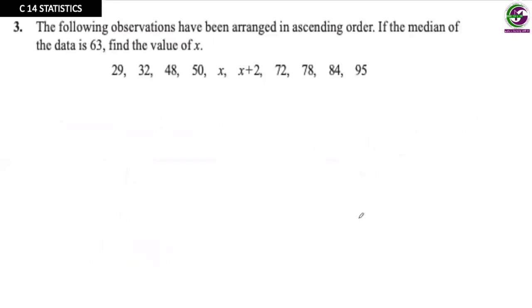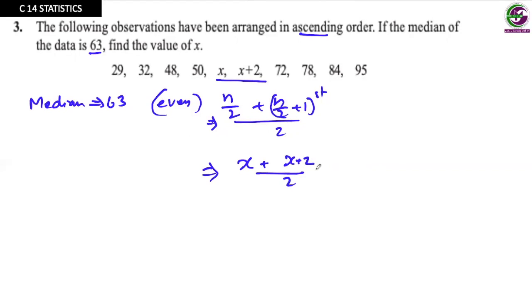Let's see the next question. The following observations have been arranged in ascending order. So it is already arranged. Median is 63. We can see there are 10 values, an even number. So it will be n by 2 plus n by 2 plus 1 divided by 2. n by 2 is fifth value plus sixth value divided by 2. x plus x plus 2 divided by 2. And the answer is 63. First, we get out of this 2. 2x plus 2 is equal to 126. 2x is equal to 124. x is equal to 62.